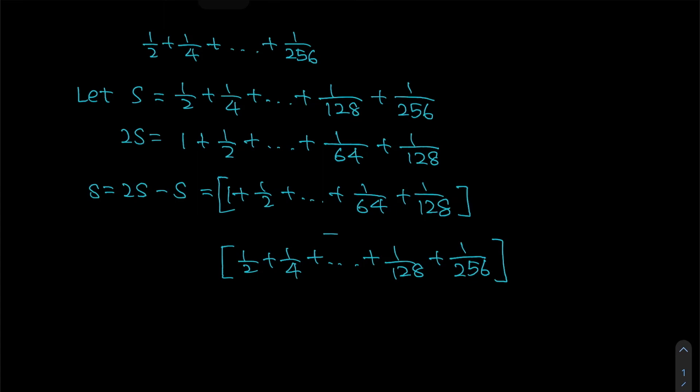Notice now that when I take 2S minus S, I can simply cancel some terms out. So half minus half, I will be able to cancel one quarter, I will also be able to cancel all the way until you are left with these two terms which is 1 and 1 over 256. Which means to say that I am left with just 1 minus 1 over 256, and this will give you 255 over 256 which is also the same answer that we worked out previously.